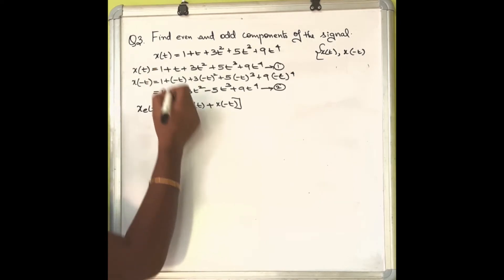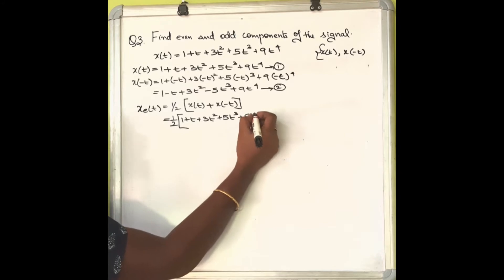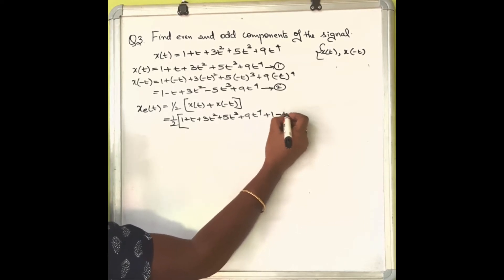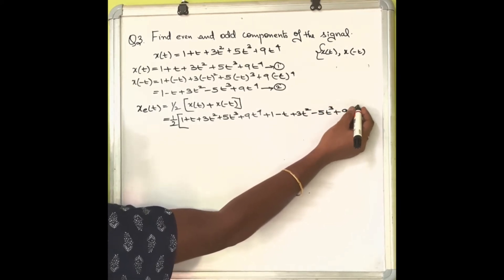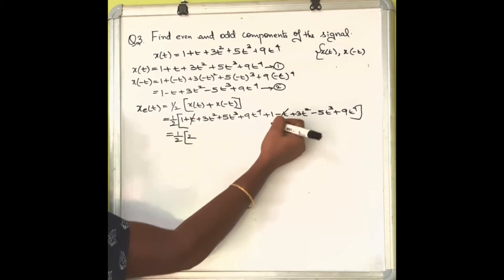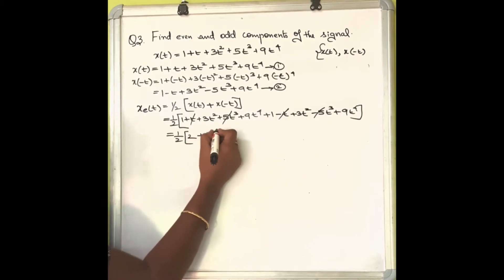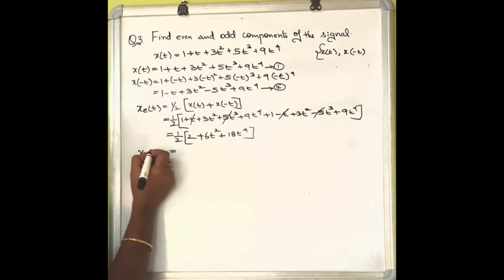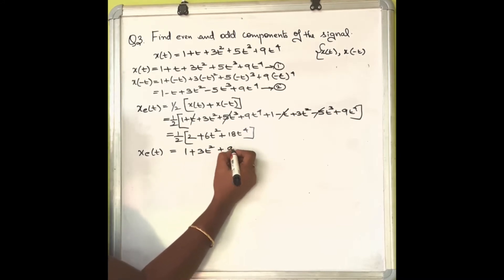We get half of [(1 + t + 3t² + 5t³ + 9t⁴) + (1 - t + 3t² - 5t³ + 9t⁴)]. Simplifying: 1 + 1 = 2, t and -t cancel, 5t³ and -5t³ cancel, giving 3t² + 3t² = 6t², and 9t⁴ + 9t⁴ = 18t⁴. So x_e(t) = 1 + 3t² + 9t⁴.